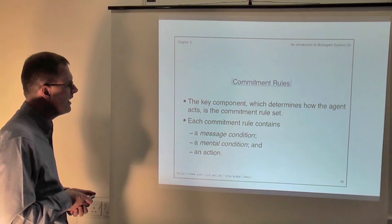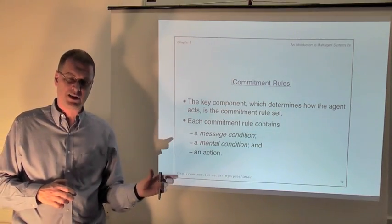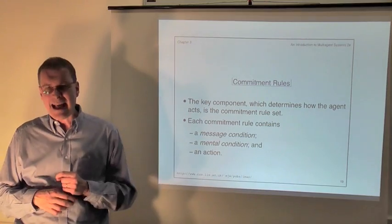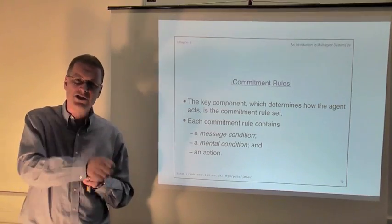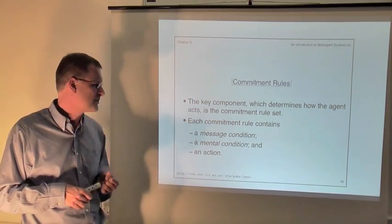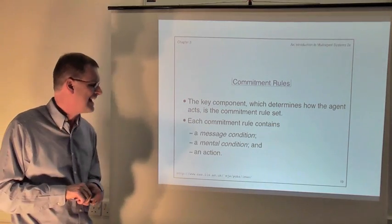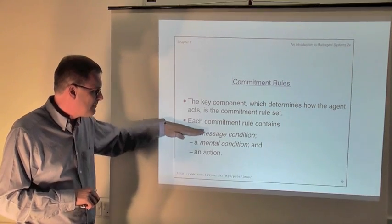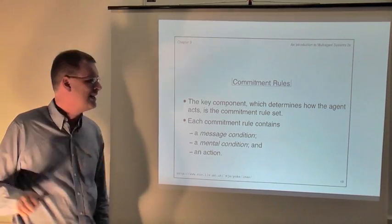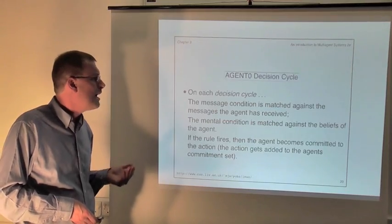Let's look at what commitment rules look like. Like all rules, a commitment rule has a left-hand side and a right-hand side. The left-hand side is a condition made up of two parts: a message condition and a mental condition. The message condition matches against messages that the agent has received — agents in Agent Zero can send one another messages. The mental condition matches against the agent's current beliefs, its internal representation of its environment. The right-hand side is the action part.